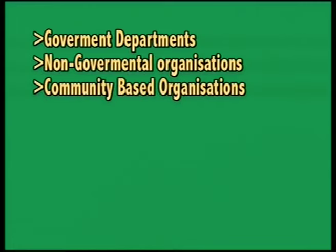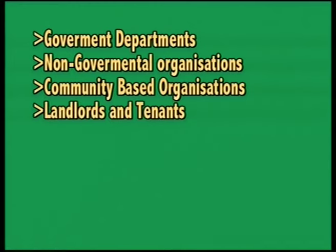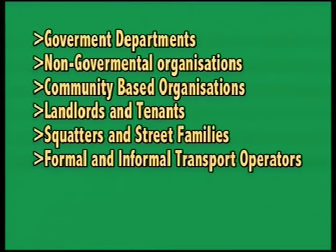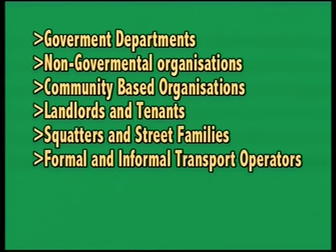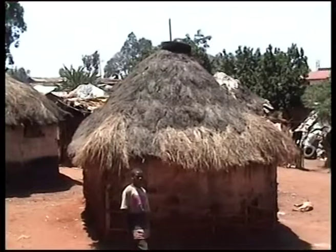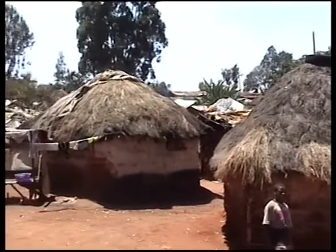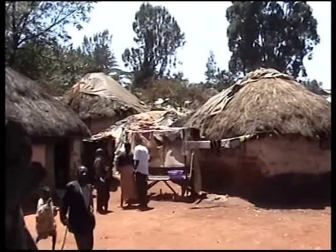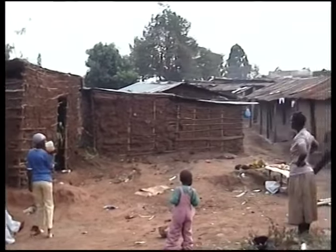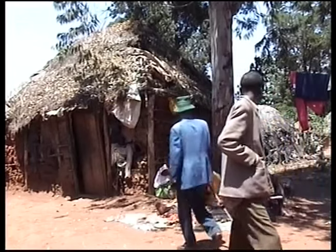The scan survey targeted government departments, non-governmental organizations, community-based organizations, landlords and tenants, squatters and street families, formal and informal transport operators, jua kali and small business operators, and water and food vendors. Eventually, the survey came up with the identified vision of the participants — that is, the Kitale we want — through which a number of priority needs were presented.